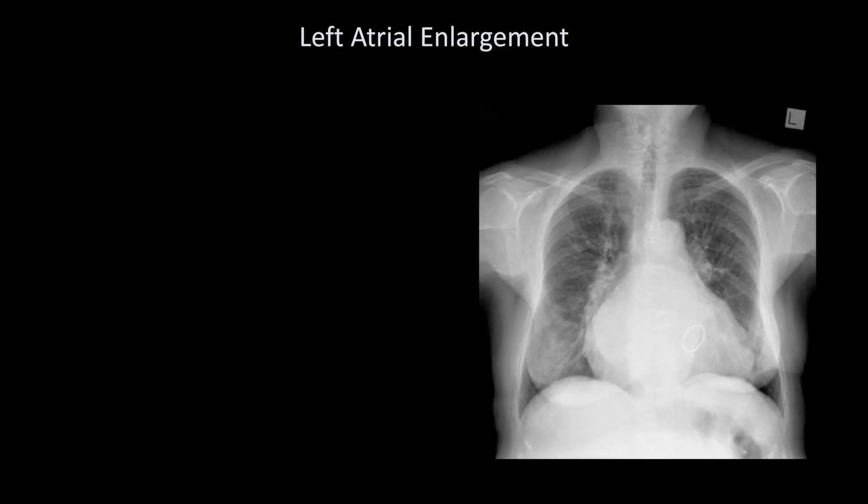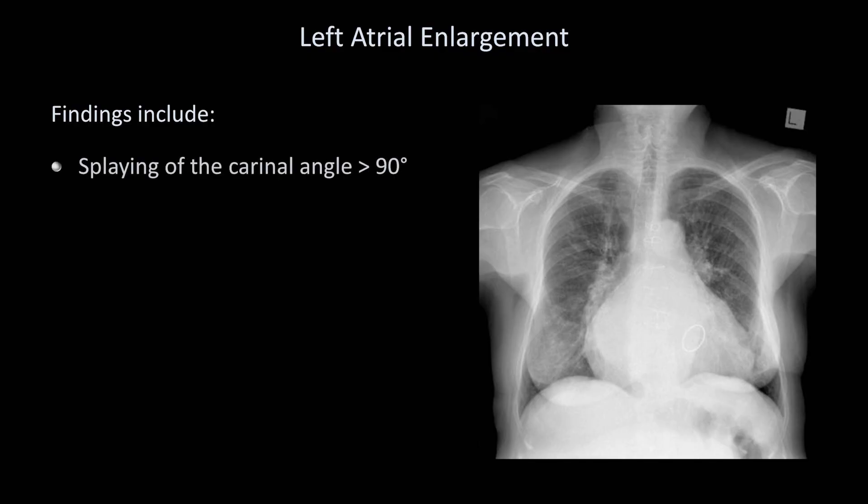While the finding of cardiomegaly concerns the heart as a whole, there are two cardiac chambers that can be identified as being enlarged on x-ray individually. The first is the left atrium. As discussed in the last lesson, one finding of left atrial enlargement is splaying of the carinal angle to a value greater than 90 degrees.